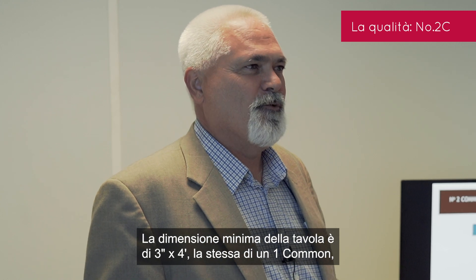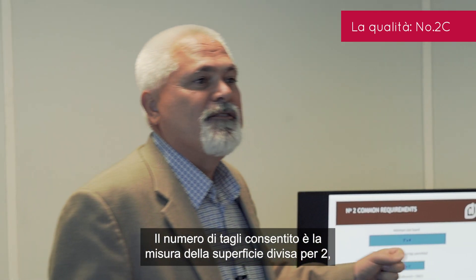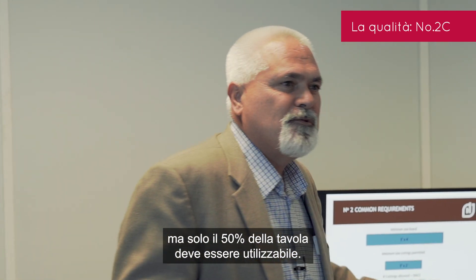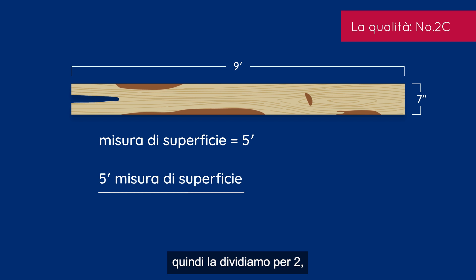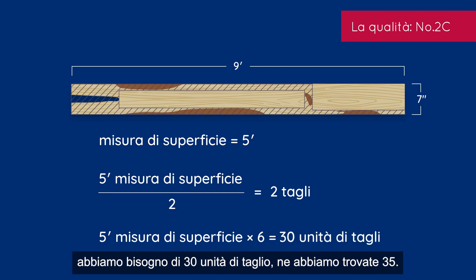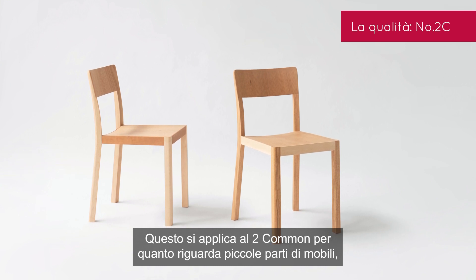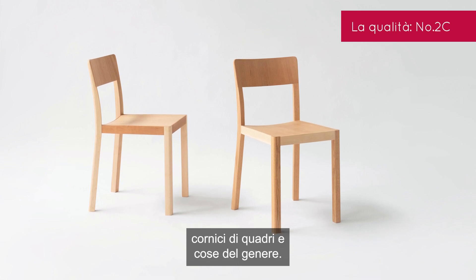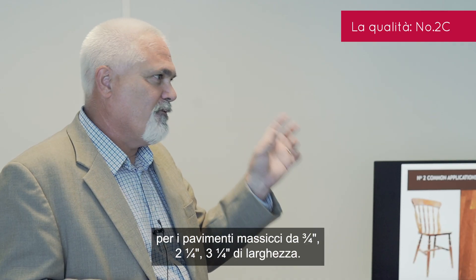The minimum size board for Two Common is 3 inches by 4 feet — same as One Common — but you only have one minimum size cutting of 3 inches by 2 feet. Number of cuttings allowed is surface measure divided by 2, and only 50% of the board needs to be usable. The surface measure of this board is 5, so we divide by 2 — we're allowed 2 cuttings. Surface measure times 6, or 50%, gives us 30 cutting units needed; we found 35. The application for Two Common is typically small furniture parts, picture frames, and similar items — but our number one staple for this is flooring: that solid 2¼ or 3¼ inch wide flooring.